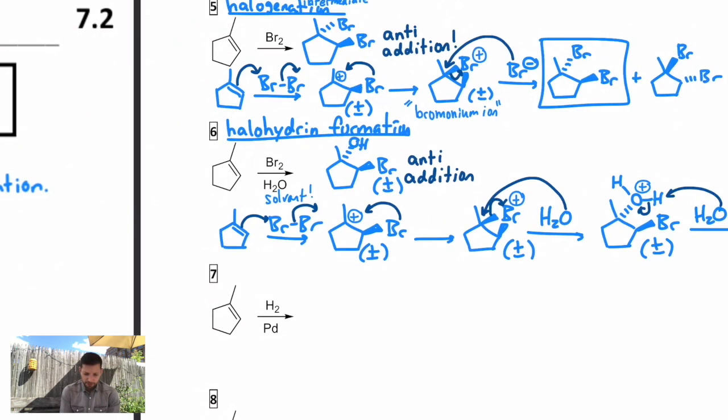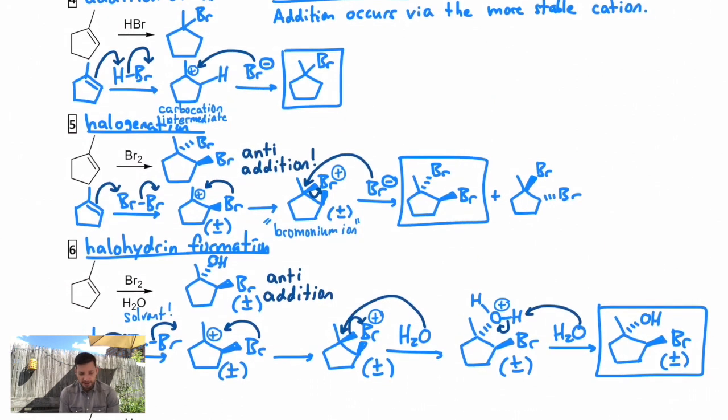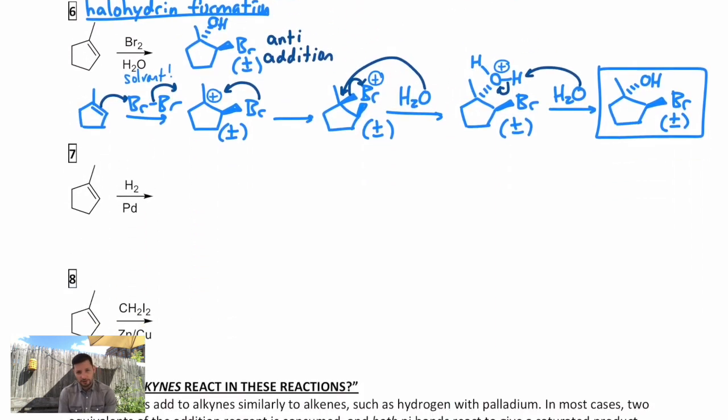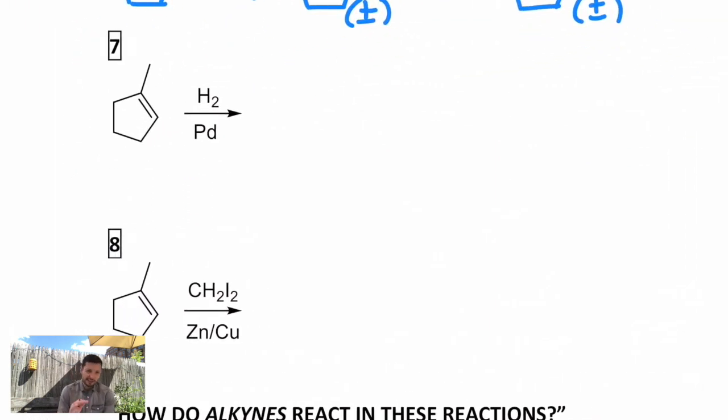All three of those examples have similar features in that the pi bond is acting as a nucleophile, attacking something electrophilic in each case. We're forming intermediates via the more substituted, more stable carbocation, and we can use this bromonium to explain the anti-addition. The last two reactions I'll show you are slightly different in their mechanism but still addition reactions.